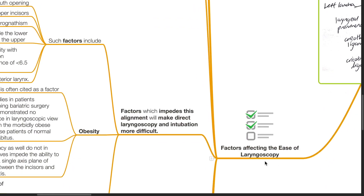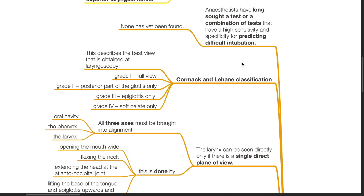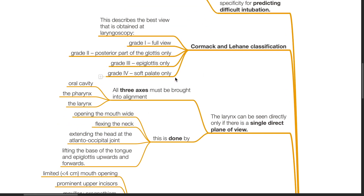Factors affecting the ease of laryngoscopy: Anaesthetists have long sought a test or combination of tests with high sensitivity and specificity for predicting difficult intubation, but none has yet been found. The Cormack and Lehane classification describes the best view obtained at laryngoscopy: grade 1 full view, grade 2 posterior part of the glottis visible only, grade 3 epiglottis visible only, and grade 4 only the soft palate is visible. Increasing grades predict more difficult laryngoscopy and intubation.